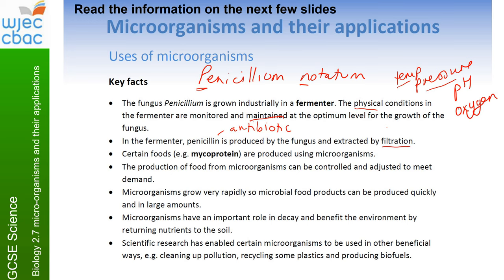The antibiotic is extracted by filtering, leaving behind all the dead bits of the fungal cells and extracting the liquid that contains penicillin. Certain foods like mycoproteins — things like Quorn mince — are produced in exactly the same way using microorganisms, and their production can be controlled and adjusted to meet demand. Microorganisms grow very rapidly; bacteria often reproduce once every 20 minutes, so microbial food products can be produced very quickly and in large amounts.